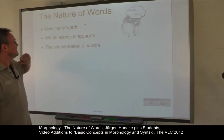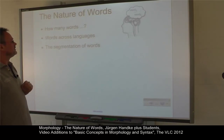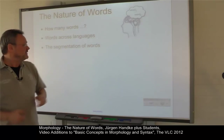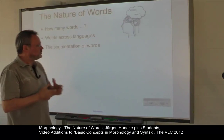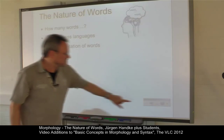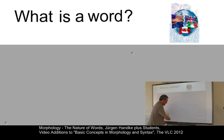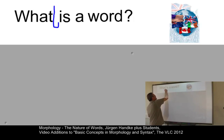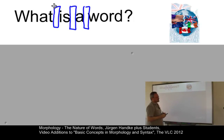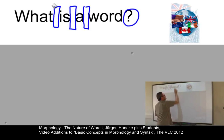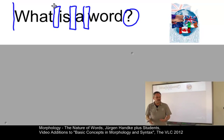We will organize our introduction as follows. First of all, we will talk about the question: how many words do we have in a certain string? Then we will look at words across languages. And finally, we will discuss the segmentation of words. So the first question is: what is a word? We might define a word as a unit surrounded by blanks in English — or defined by a blank plus a punctuation mark, or the beginning of a sentence.